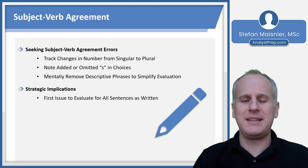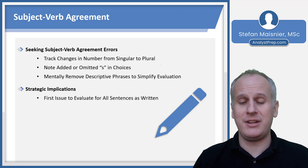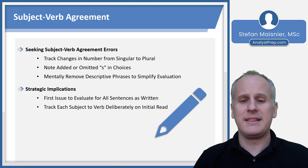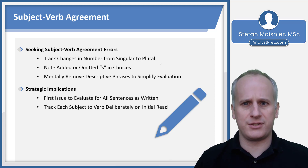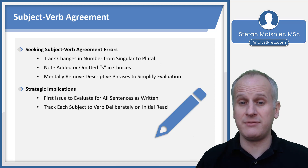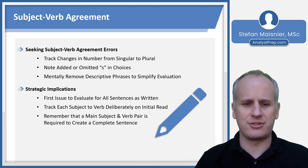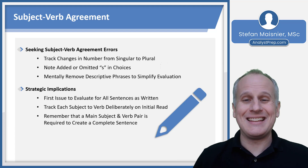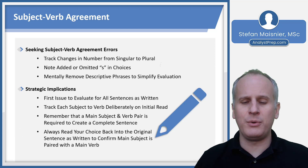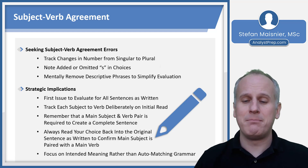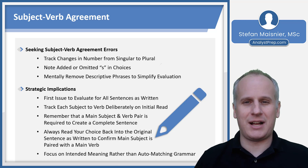Strategically, subject-verb agreement should be the primary issue to evaluate for all sentences as written, and that's going to be simple to evaluate once you focus on it. You can track your subjects and verbs deliberately on your initial read to identify this relatively common issue. A main subject and verb pair is what makes a sentence a sentence, so that's required for any sentence to be complete. Read your choice back into the original sentence to confirm the main subject is paired with a main verb, and focus on intended meaning rather than just auto-matching grammar.